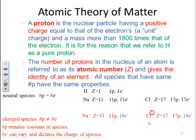Sodium plus: since it has a positive charge, that means it has more protons than electrons by one. The atomic number is 11, so it has 11 protons, but in this case it has only 10 electrons.